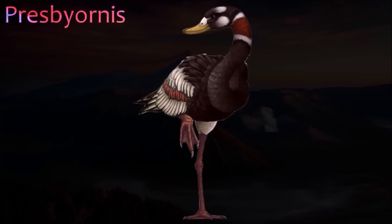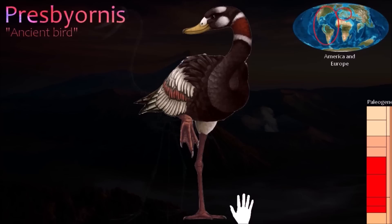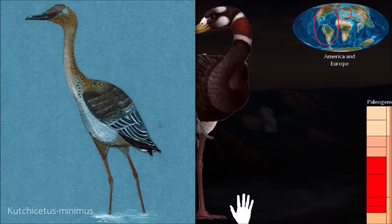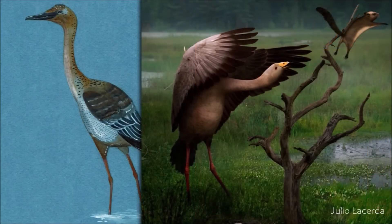Presbyornis has been found in large numbers in the Green River Shale of Wyoming and in Eocene deposits representing shallow freshwater lakes. Eggs and nests have also been found in the same rocks, and it probably lived in large flocks along the lake shores. It would have waded in the shallows and used its beak to filter out food from the water, as many ducks do today. It was one of the most successful species of its time, living for 20 million years.